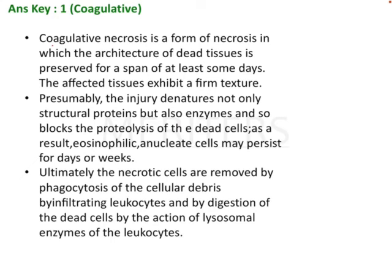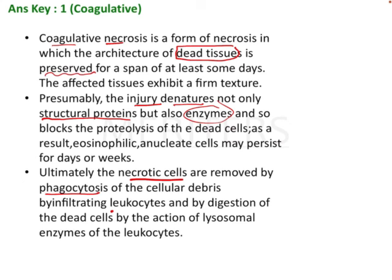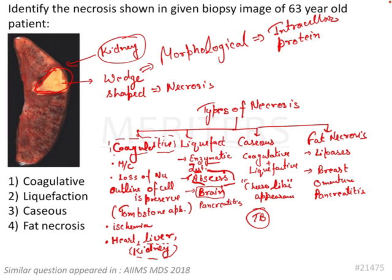Coagulative necrosis is a form of necrosis in which the architecture of dead tissue is preserved — you will see the tombstones. Injury occurs from proteolysis and degradation of structural proteins. Ultimately, necrotic cells are removed by phagocytosis via leukocytes and neutrophils using lysosomal enzymes. For image-based exam questions in AIIMS or NEET, identifying the organ will solve most problems and let you answer correctly.